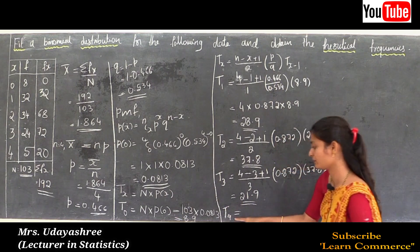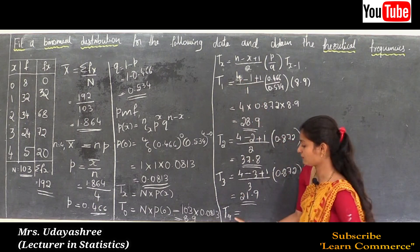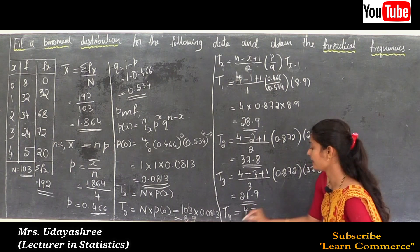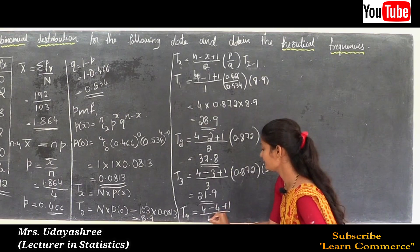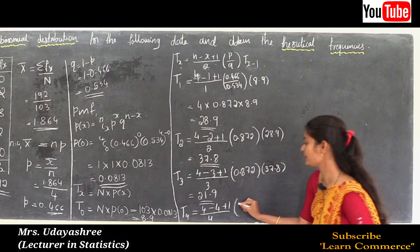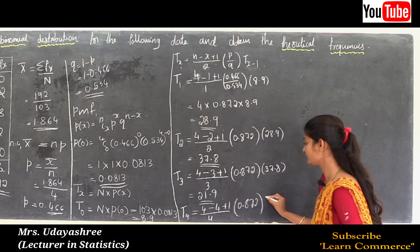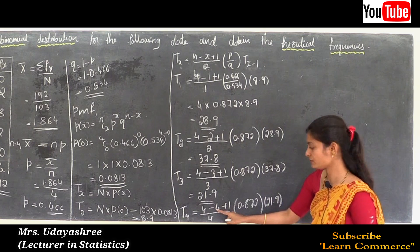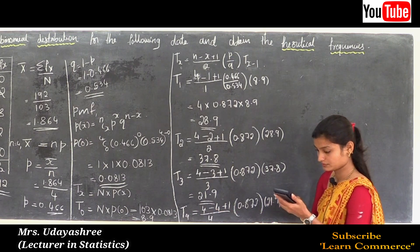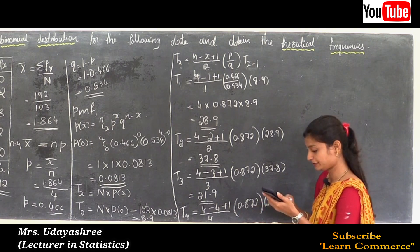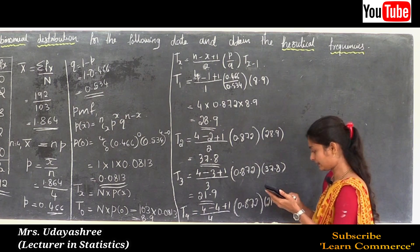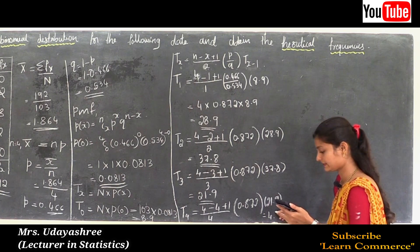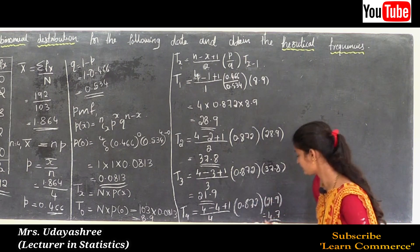Calculate t4. With x = 4, n = 4, p/q = 0.872, and t3 = 21.9: t4 = [(4 − 4 + 1)/4] · 0.872 · 21.9 = (1/4) · 0.872 · 21.9 = 0.25 × 0.872 × 21.9 = 4.7.